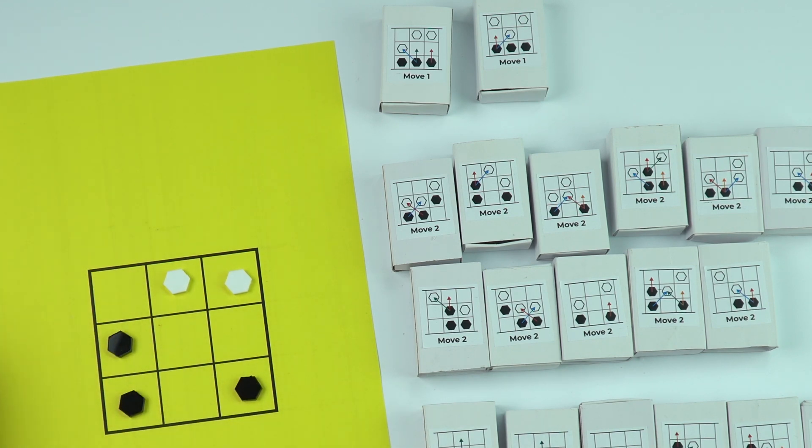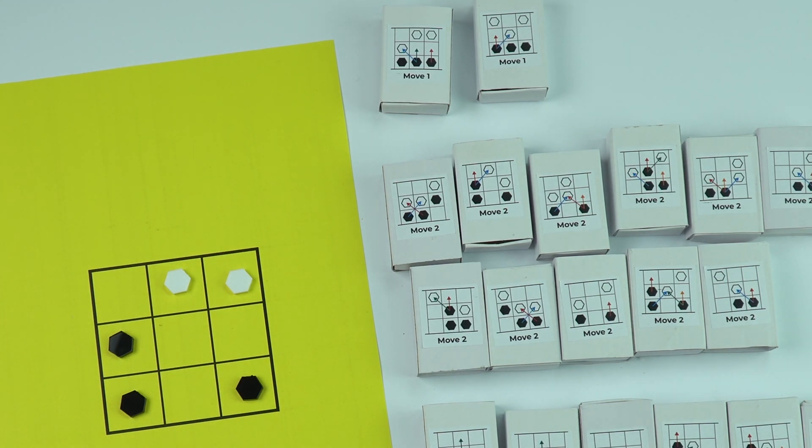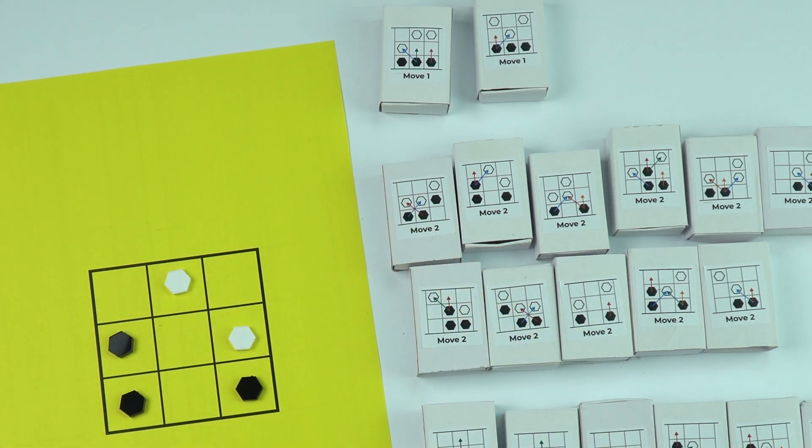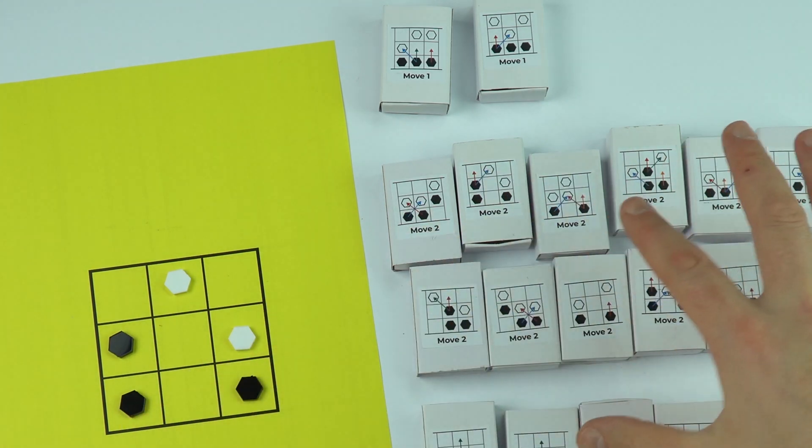We're now at this position. What I'm going to do is imagine I'm the white player. I could do a few things, but I'm going to move this piece forward. Now it's the go of the computer, so looking at the options here.